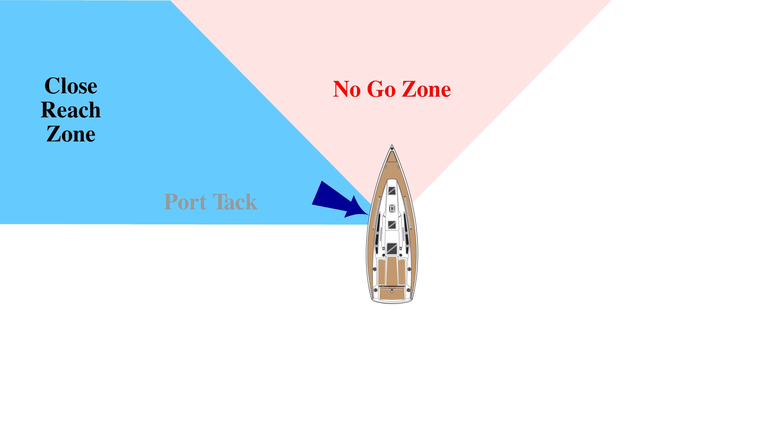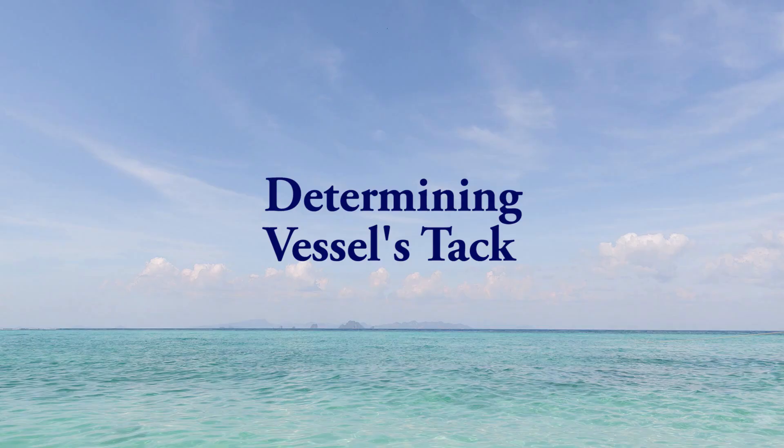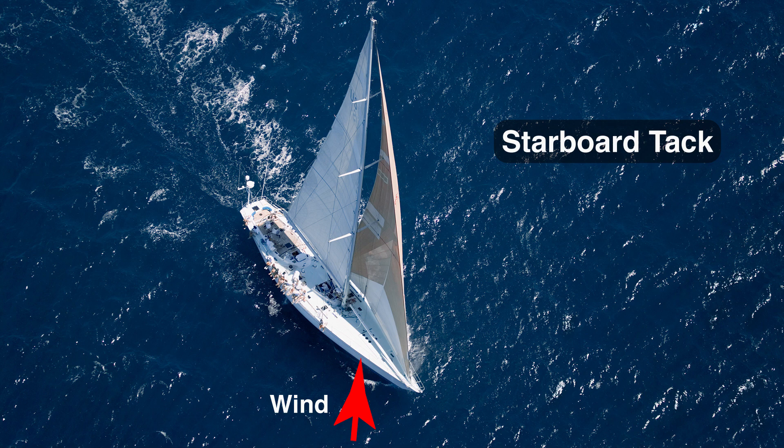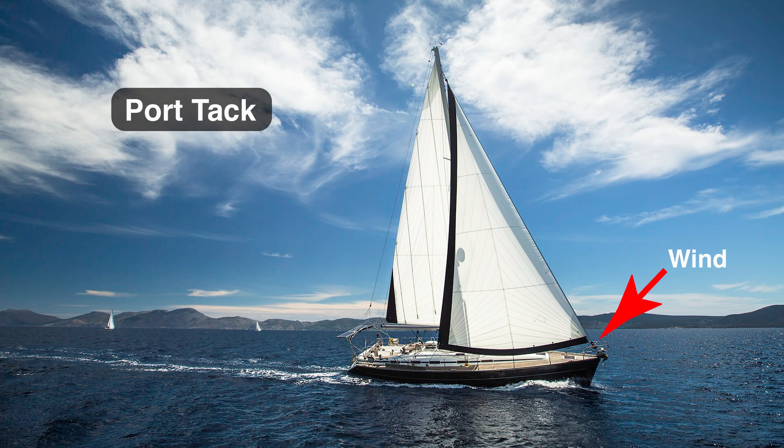Now I want to define how to correctly determine the tack of a sailing vessel. A common misconception is that the tack is determined by which side of the boat the wind is hitting. So if the wind is on the starboard side of the boat, you're on a starboard tack. Conversely, if the wind is coming from port, you're on a port tack.